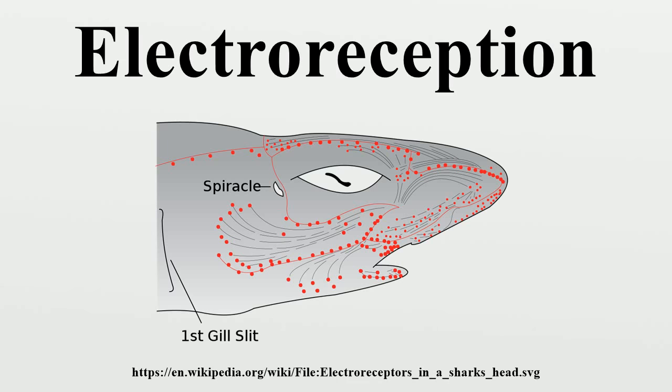Bees can detect both the presence and the pattern of electric fields on flowers, and use this information to know if a flower has been recently visited by another bee and is therefore likely to have a reduced concentration of nectar.